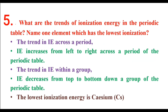Number five: what are the trends of ionization energy in the periodic table? Name one element which has the lowest ionization energy. Ionization energy increases from left to right across a period of the periodic table.